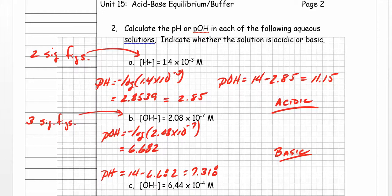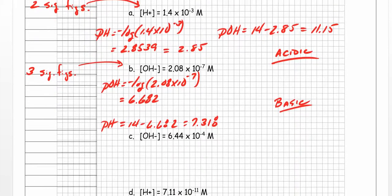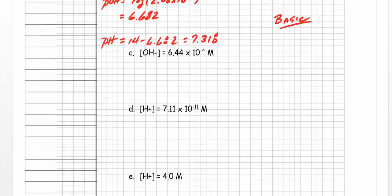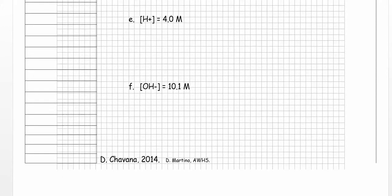Now if I want the pH, I simply subtract 6.682 from 14, and I get 7.318. Would that be acidic or basic? Look to the pH — if it's above 7 it's basic, and 7.318 is slightly above 7, so it's going to be basic. I'm going to let you practice the next three or four on your own — that'll get you ready for the next level.